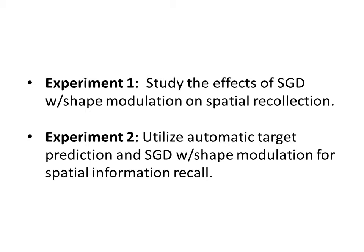In this study, we conducted two experiments. Experiment 1 was designed to study the effect of SGD with shape modulation on pre-selected target regions for shape recollection. In experiment 2, the target regions were automatically generated and viewers were guided to these locations using SGD with shape modulations. It is possible that our technique may select some target regions unrelated to recollection tasks, and the goal of this experiment is to determine if these false positives adversely affect the viewer's task performance.